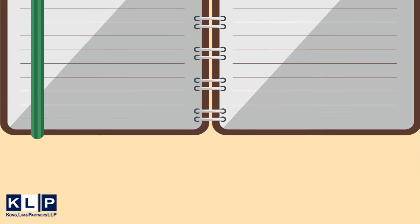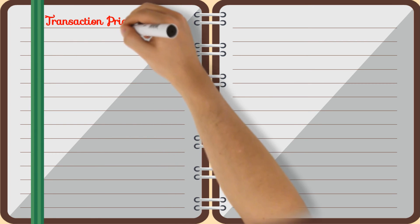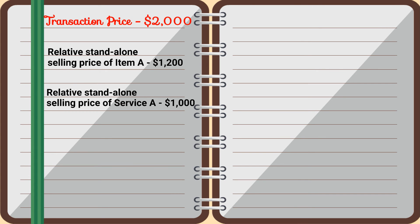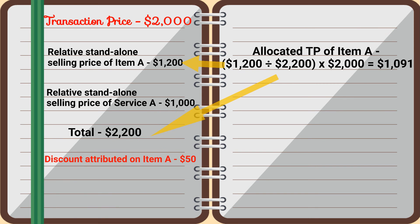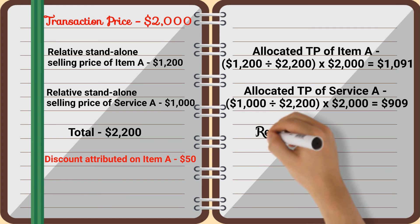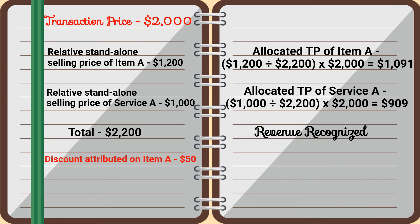Take into consideration this journal entry. The transaction price is determined at $2,000. The stand-alone selling price of the item and the service provided is $2,200. The item is discounted at $50. The allocated transaction price would thus be as follows, and therefore revenue recognised would be as follows.